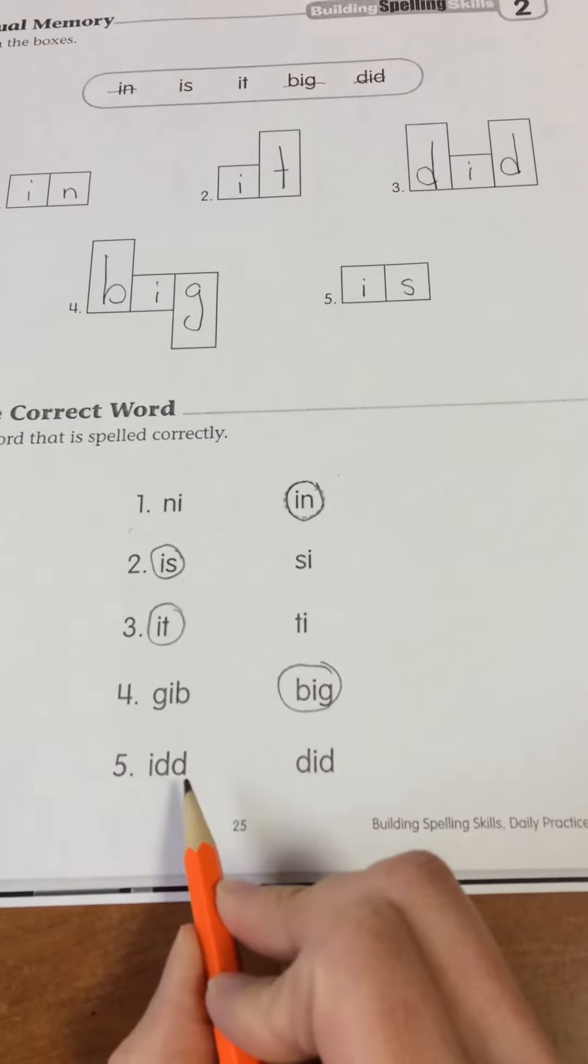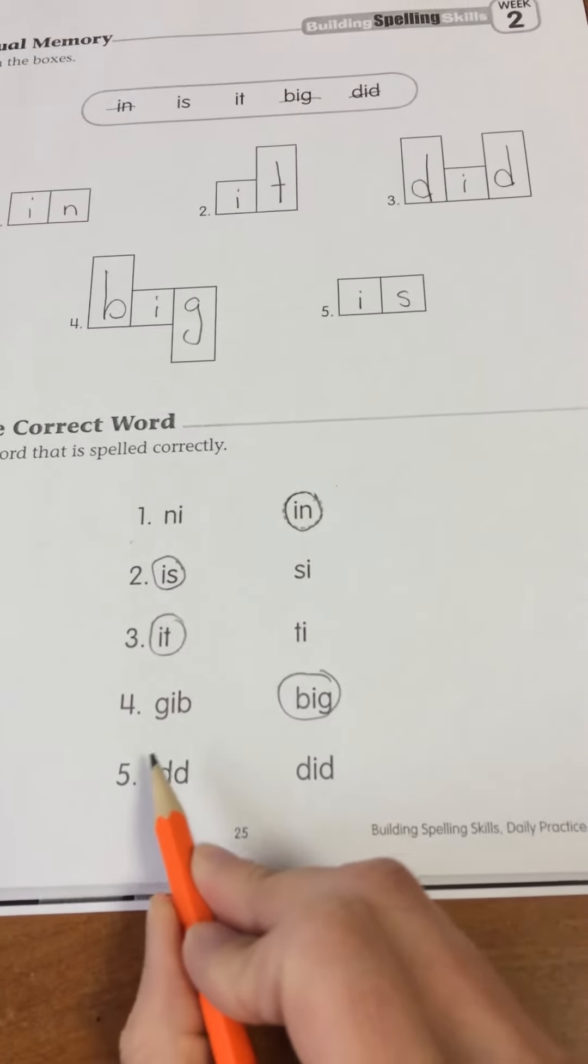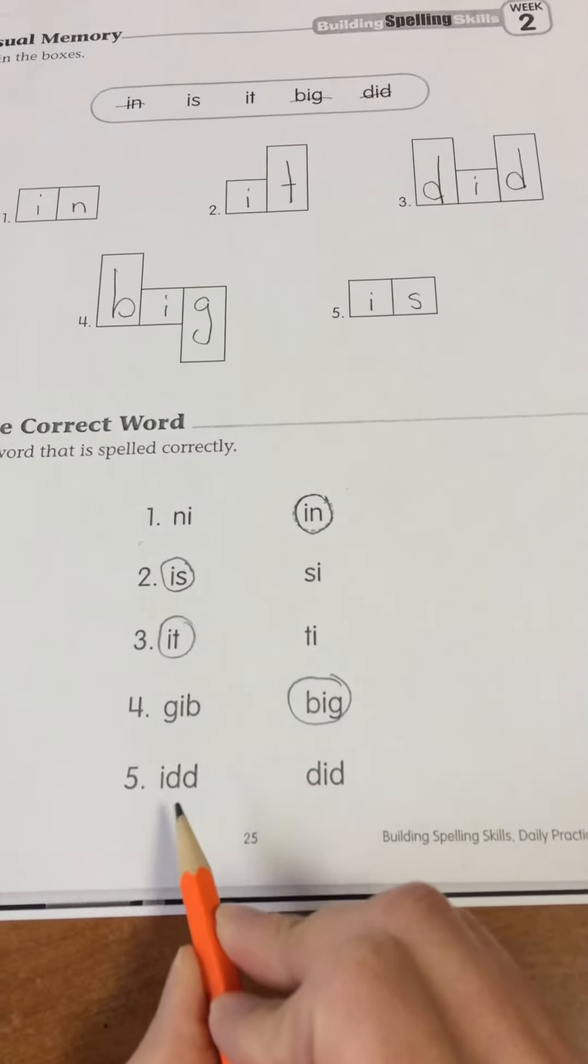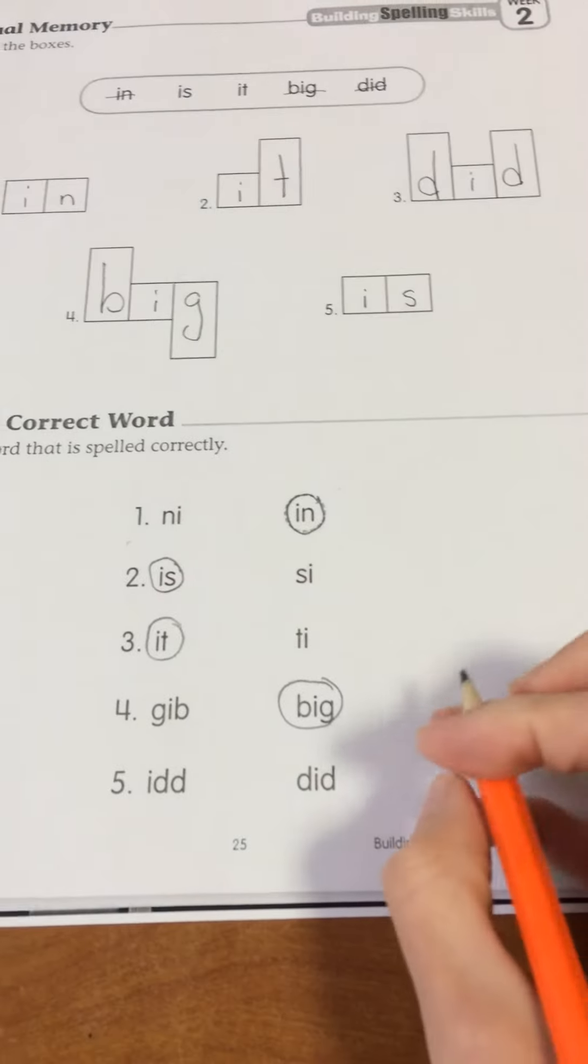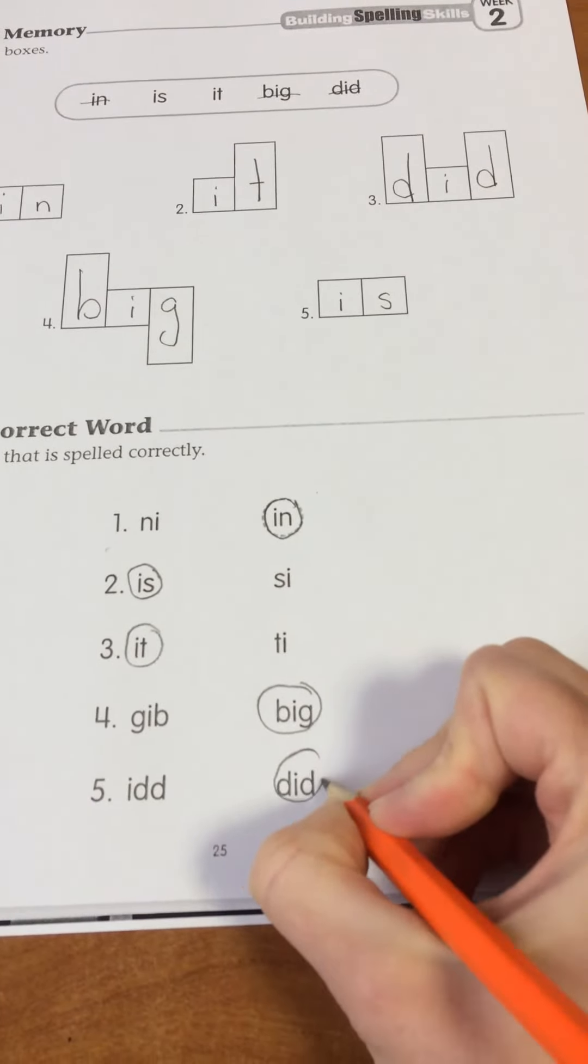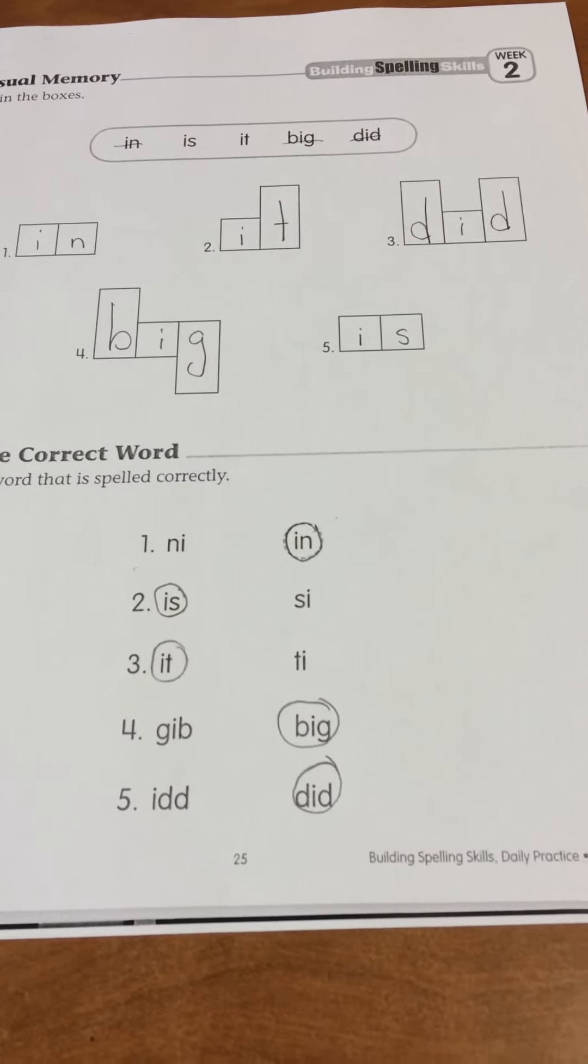Next one, I, D, D or D, I, D. I'm not sure how you would sound this out. It would be like idd, but we want D, I, D for this one. So that is page 25.